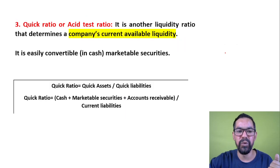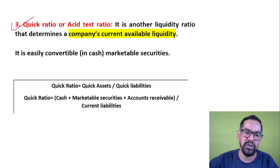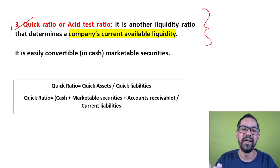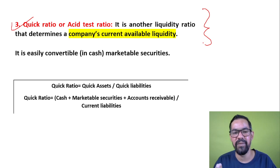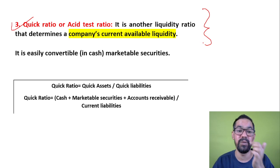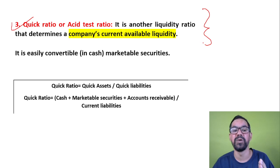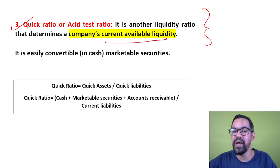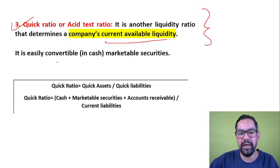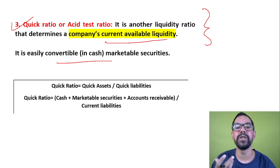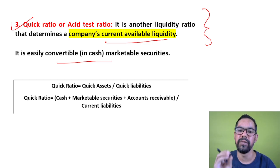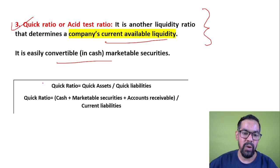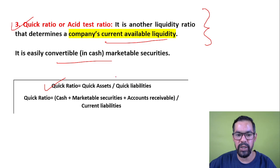The next ratio is the quick ratio, also called the acid test ratio. This is one of the most frequently asked questions in exams and interviews. It is another liquidity ratio that determines a company's available liquidity — how easily assets can be converted into cash. Quick Ratio = Quick Assets divided by Quick Liabilities. Quick assets include cash and marketable securities.